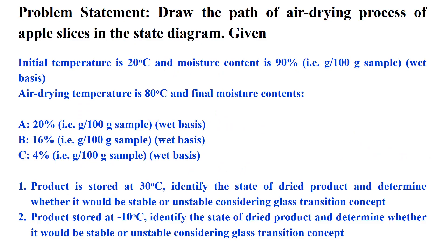I need to explain the problem statement. The initial temperature of apple is 20°C and moisture content is 90%. Air drying temperature is 80°C and final moisture content is first 20%, second 16%, and third 4%. We need to draw the drying path for two storage temperatures. The first product is stored at 30°C, and we need to identify the state of the dried product and determine whether it would be stable or unstable considering the glass transition concept.